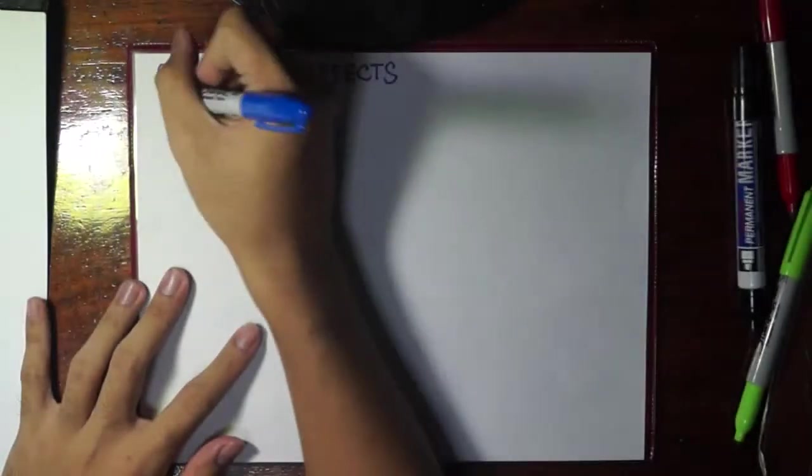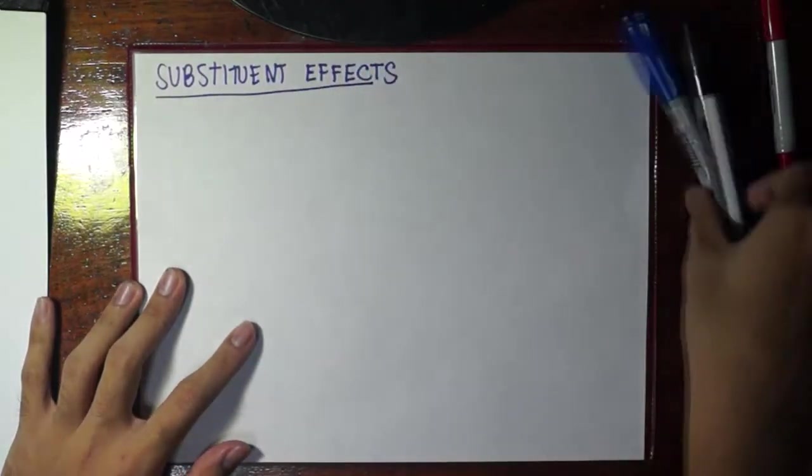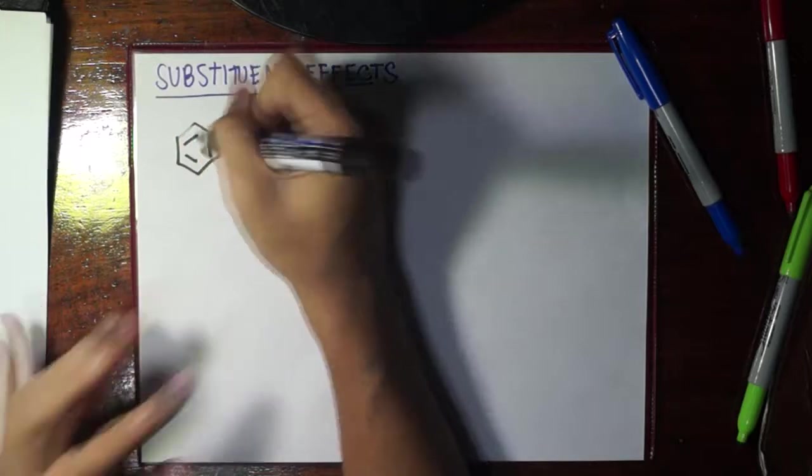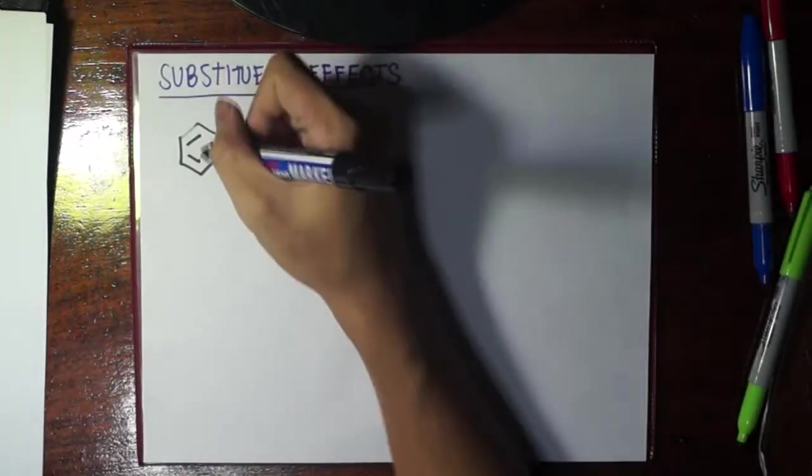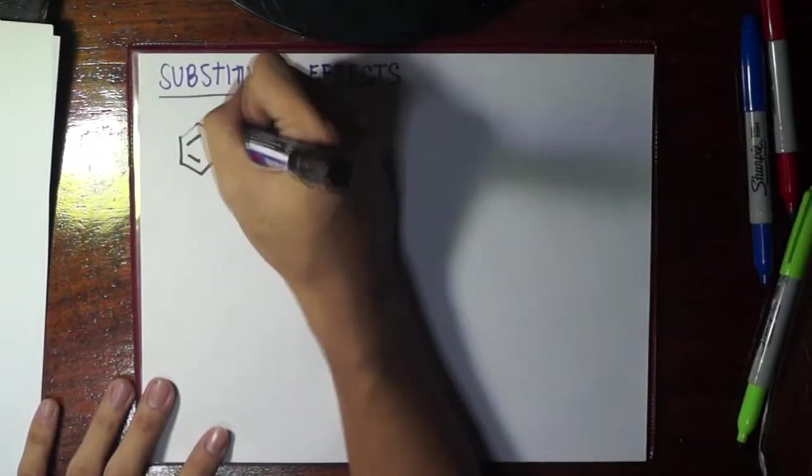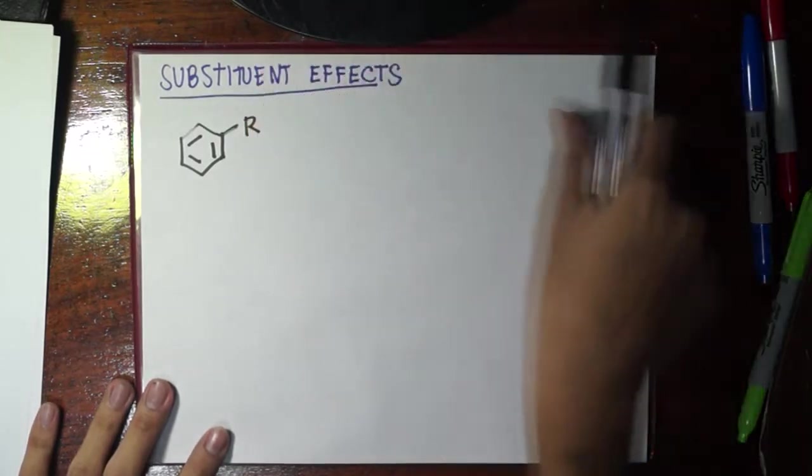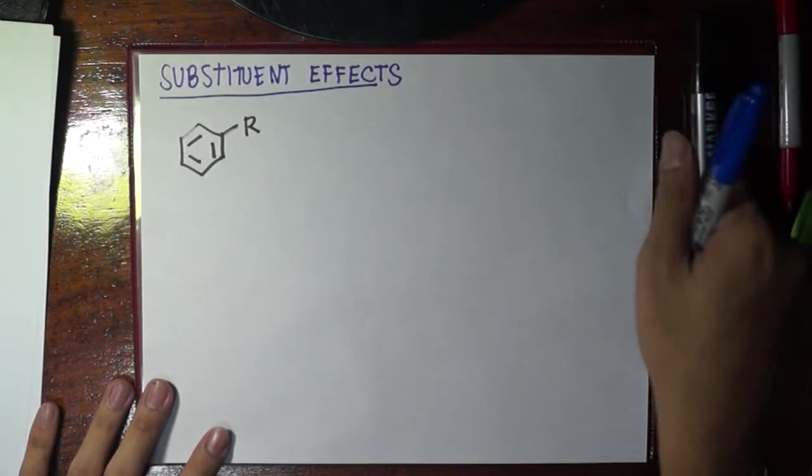Now we will talk about the effects of a certain substituent in the benzene ring. Let's draw a benzene ring here and put any substituent R. These R substituents will actually have two main influences on the next substituent.